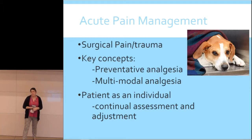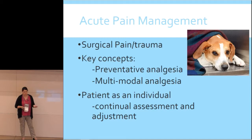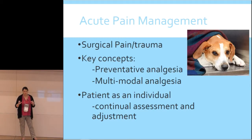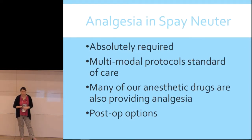Animals are individuals, so we need a plan for continual assessment and adjustment. Staff should know what to expect, and pet owners being discharged animals need to be told what signs indicate they should give medications and when to call. Most standard spay neuter protocols are already multimodal and preventative. It's when you go outside spay neuter that you need to ask: is my patient stable, and have I gone as broad-spectrum and multimodal as needed?